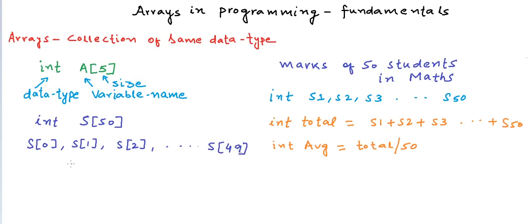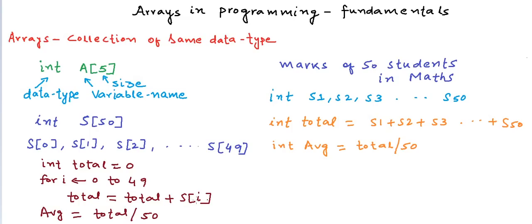Our program will be something like: we again have a variable total and this time we run a loop from 0 to 49, and we use the variable i as index and keep on adding si to total, and finally we calculate average as before which is total upon 50.